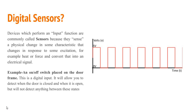For example, an on-off switch placed on the door frame — so an on-off switch has been kept on the door frame. What will it do? It will tell us whether the door is open or closed. This is how digital sensors work.